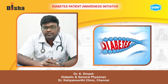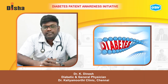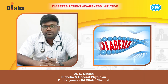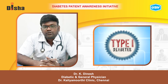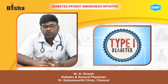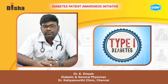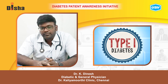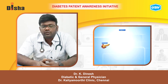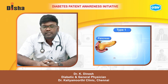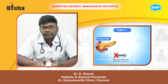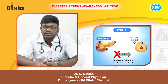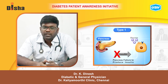Today my topic is about whether type 1 diabetes is an autoimmune disorder. Type 1 diabetes is also called juvenile diabetes. One of the major reasons for it occurring is the autoimmune disorder which the child develops from childhood.